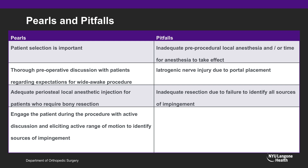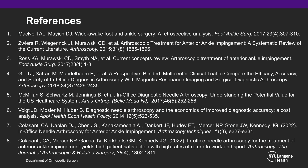Pearls and pitfalls for this procedure: patient selection is critical, as some patients may not tolerate an in-office wide-awake procedure, and a careful preoperative discussion regarding expectations is essential. For patients requiring bony resection, adequate periosteal local anesthetic injection is important. Engaging the patient during the procedure — through conversation and eliciting active range of motion — helps identify impingement sources. Common pitfalls include insufficient pre-procedural local anesthetic, inadequate time for anesthetic effect, iatrogenic nerve injury due to portal placement, and inadequate resection due to failure to identify all sources of ankle impingement.